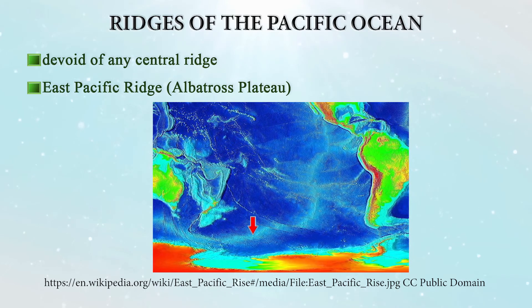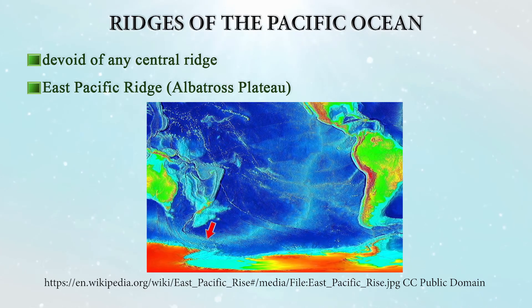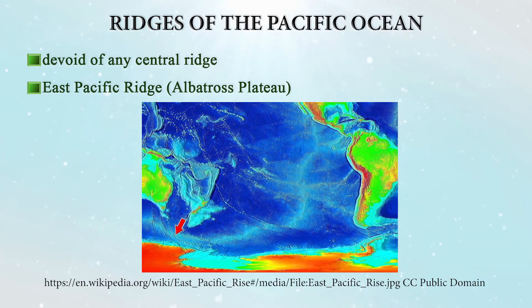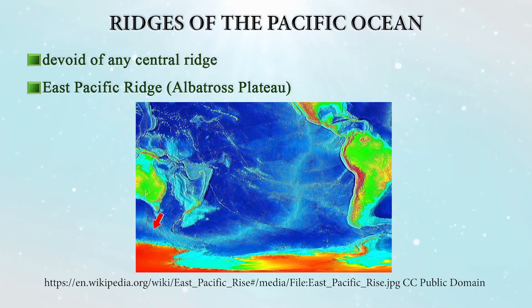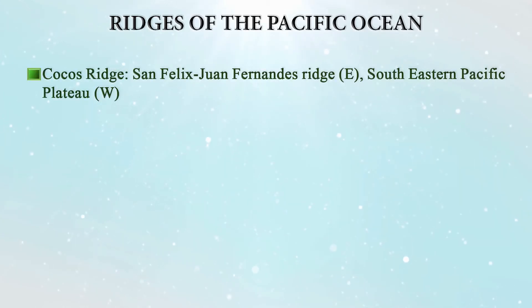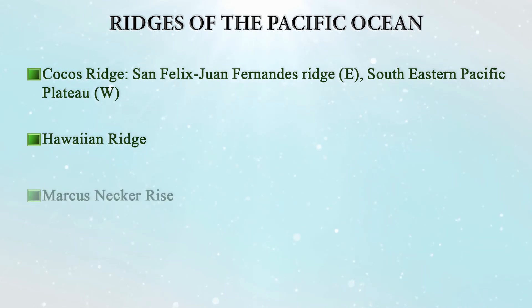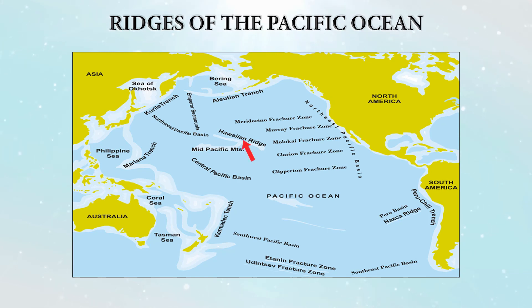The satellite image of the East Pacific Ridge is from NOAA-NGDC — the National Oceanic and Atmospheric Administration and National Geophysical Data Centre — and is in the public domain. The Cocos Ridge bifurcates into two parts: the eastern part called the Felix-Juan Fernández Ridge and the western part called the South Eastern Pacific Plateau. Other ridges include the Hawaiian Ridge, Marcus-Necker Ridge, and Chatham Ridge. The Hawaiian Ridge is located near the Hawaiian Islands in the central part of the Pacific Ocean, and several fracture zones are also clearly visible in this figure.